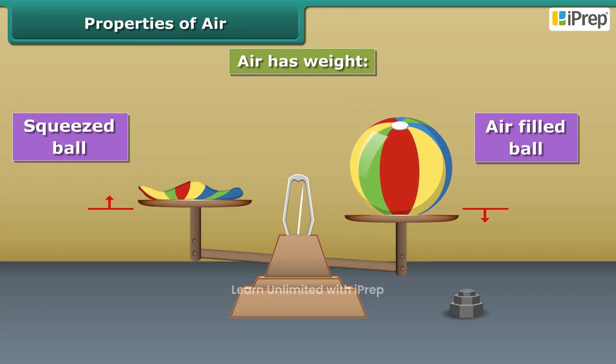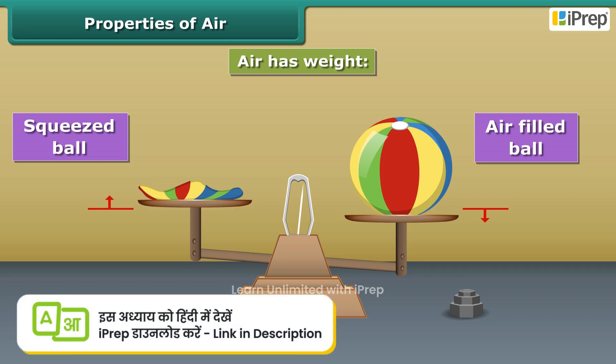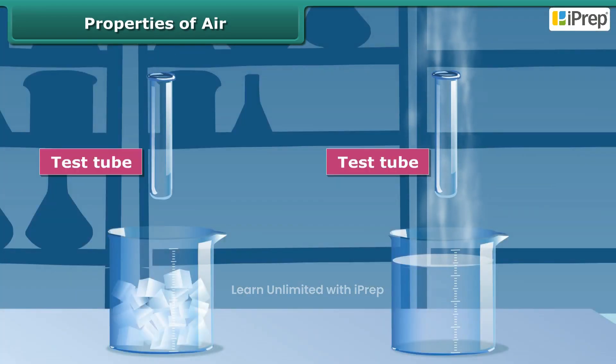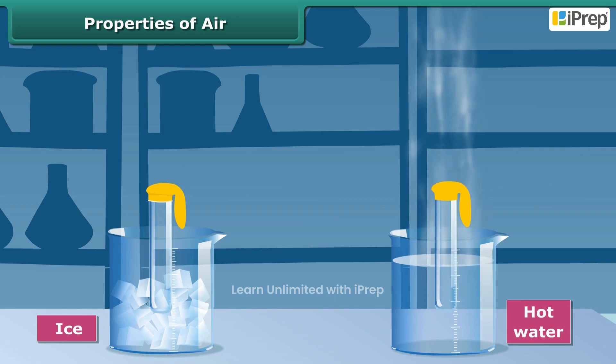You can see the pan with the squeezed ball goes up, indicating that it is lighter than the air-filled one. Now take two empty test tubes and place a balloon over the mouth of each bottle. Put one test tube in a pan of hot water and the other one in a pan with ice.